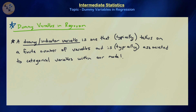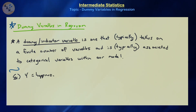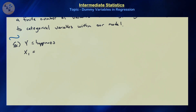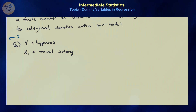To start things off, let's look at a particular example. Let's assume that we want to model happiness, defined on a continuous spectrum from 0 to 100. We also have another variable x1, which is annual salary, and we want to see if there's a linear relationship between annual salary and happiness. Annual salary can be defined on a continuous spectrum from 0 to positive infinity.